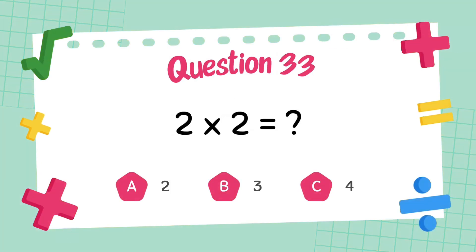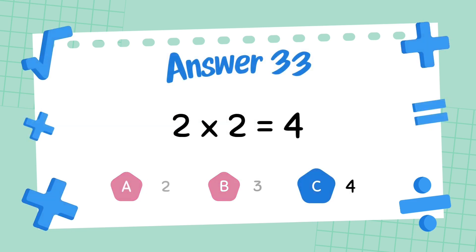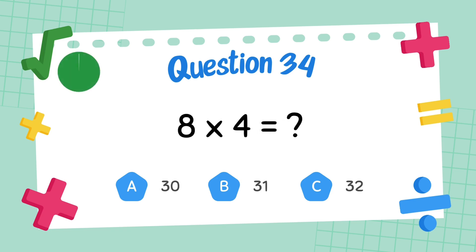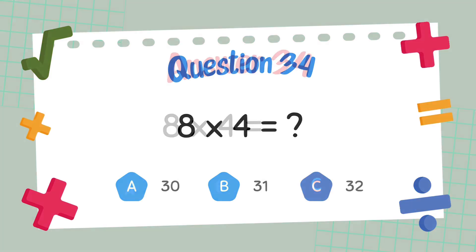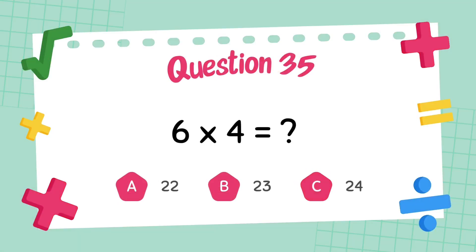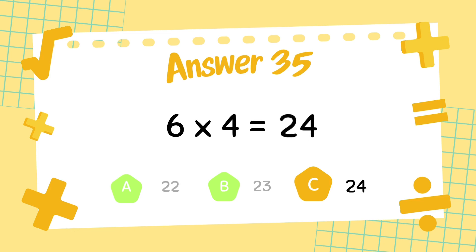What is 2 multiply 2? The answer is 4. What is 8 multiply 4? The answer is 32. What is 6 multiply 4? The answer is 24.